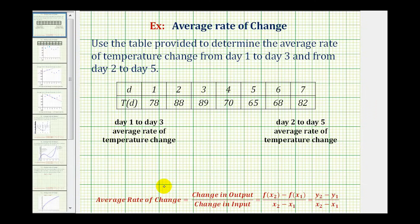To find the average rate of change, we'll take the change in the output — in this case the change in temperature — and divide by the change in input, which in this case would be the change in days. This can also be expressed using function notation, where the change in the output would be the change in T of D, divided by the change in D.